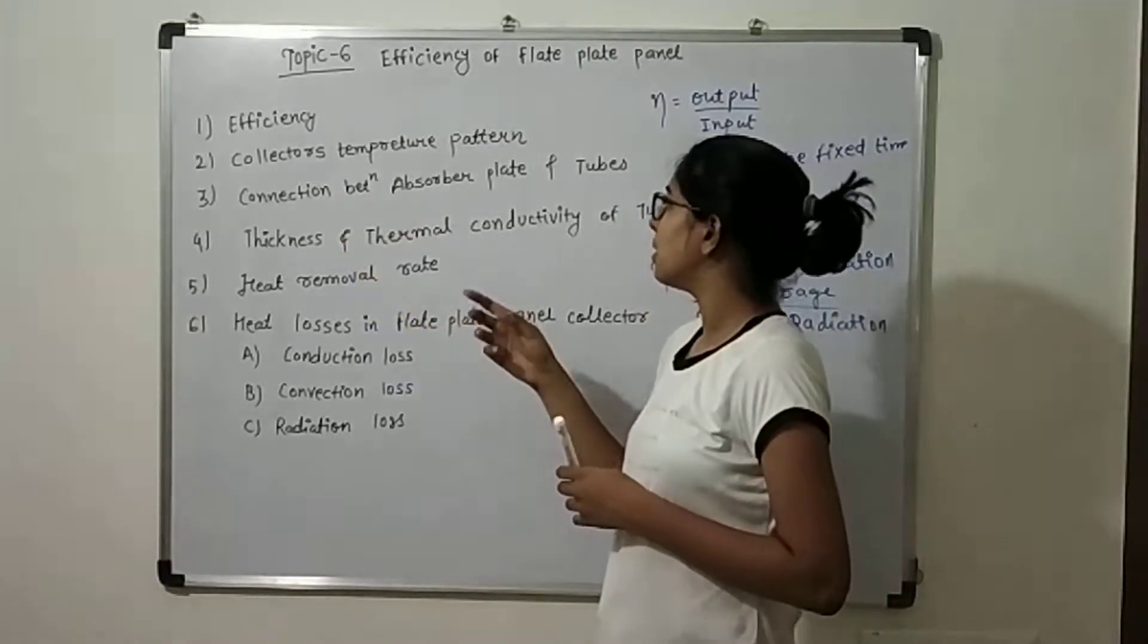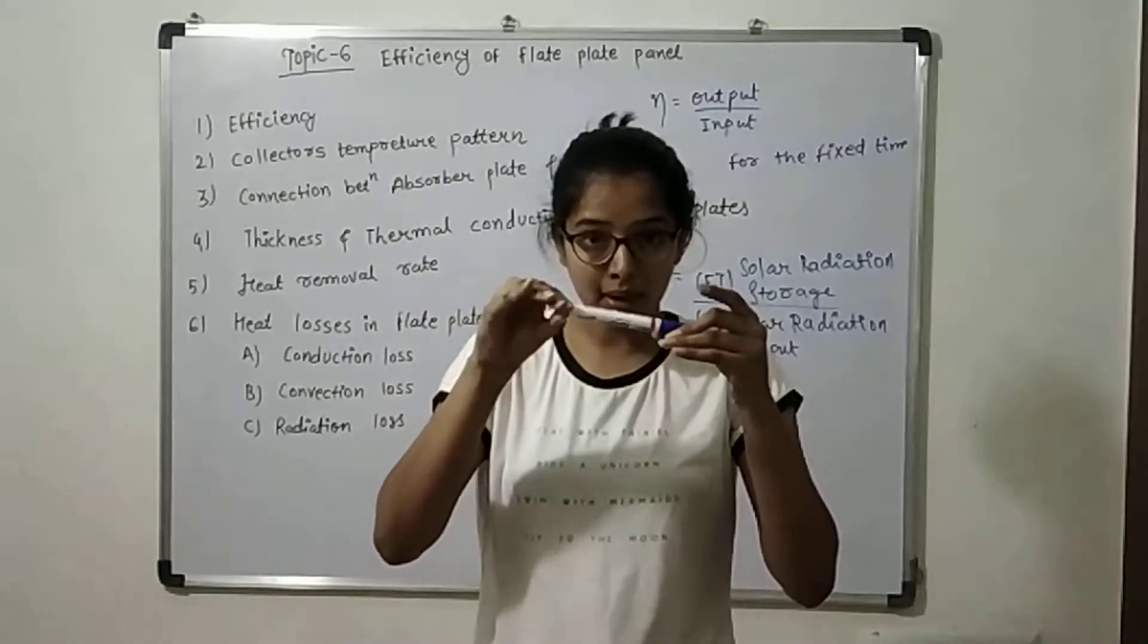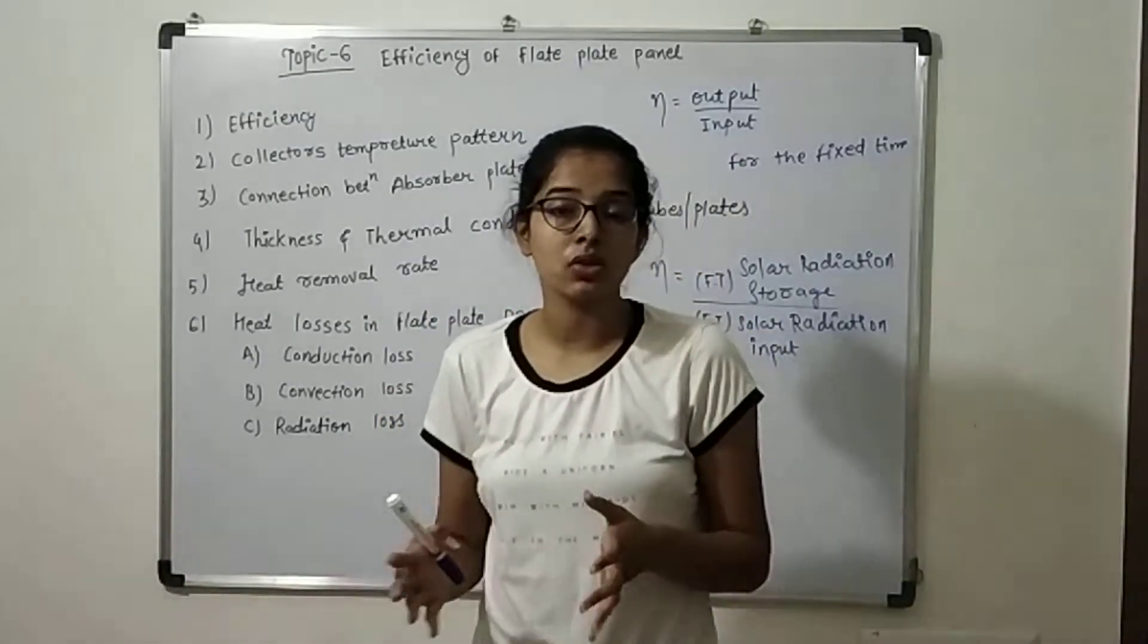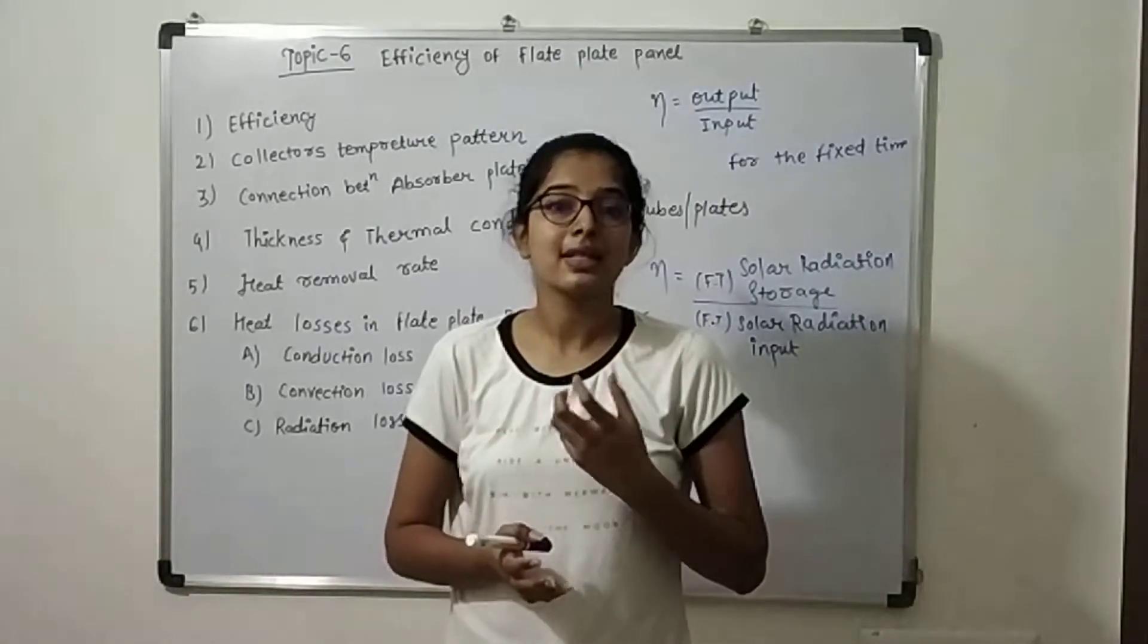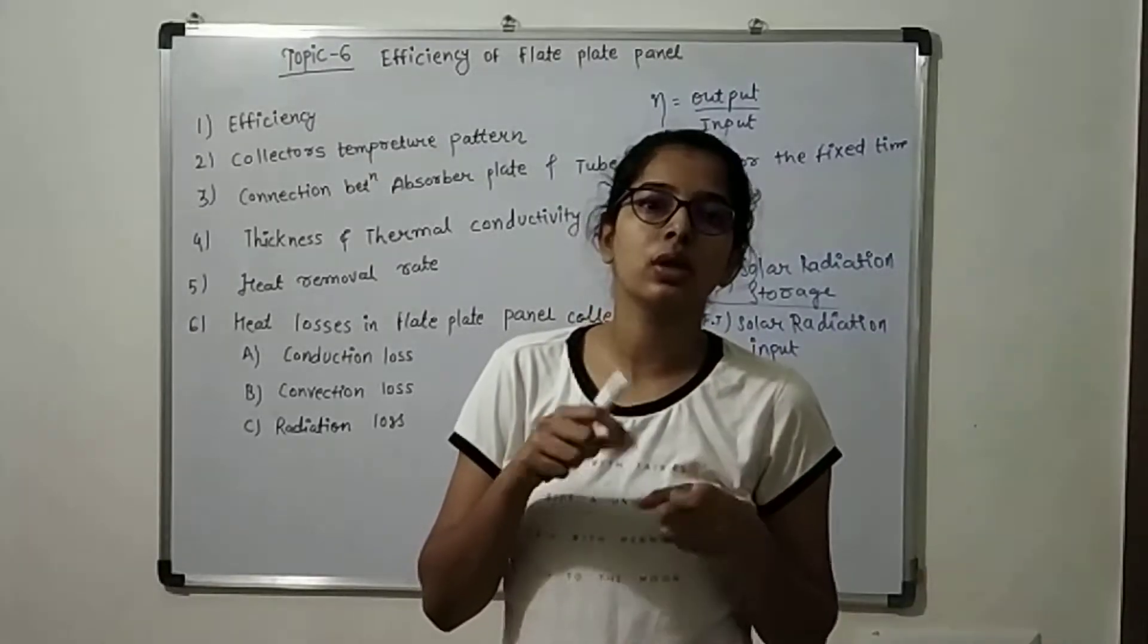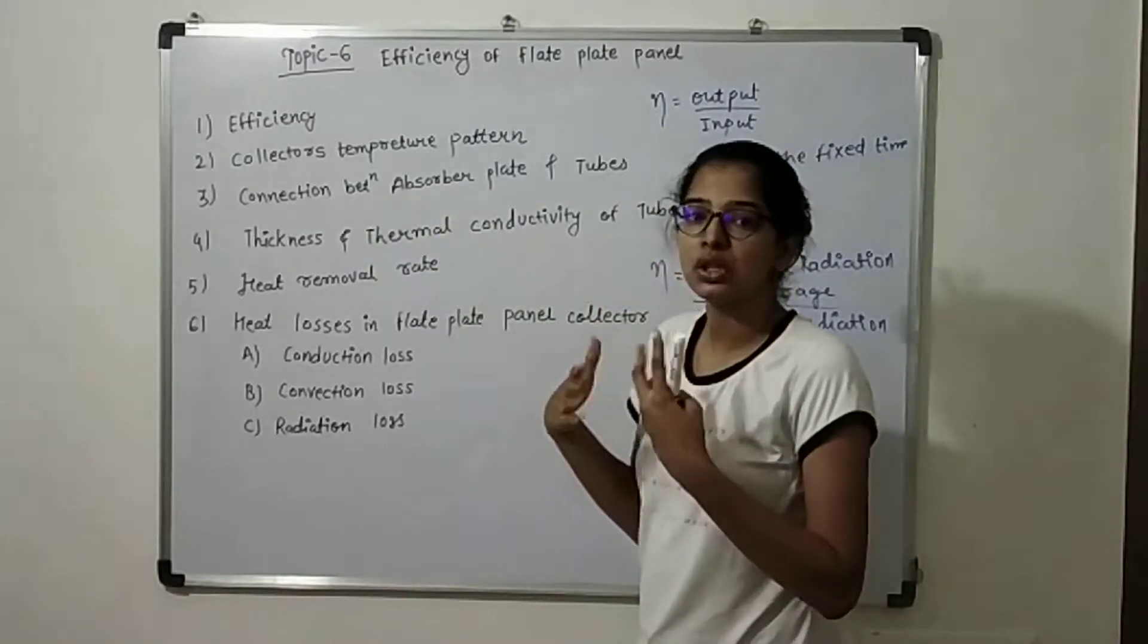The third point is the connection between the absorber plate and tubes. The absorber plate is fixed, so the tubes are fixed, and the welding is fixed. What type of welding should be? Arc welding, submerged welding, then you can go to the bracing and leave the rivets. This is the connection of the type.